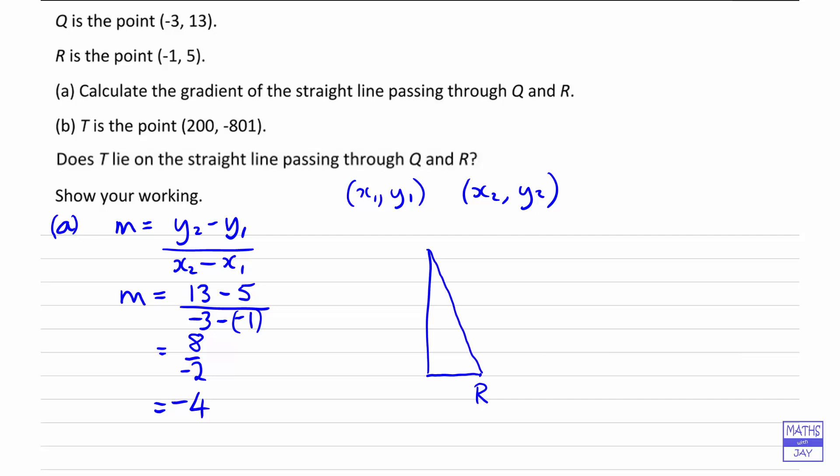So this is just a sketch to kind of think about where one point is in relation to the other. So we've got a right angle triangle where this side is 2 and this side is 8. And we can see the gradient is negative, so the gradient is going to be the difference in y divided by the difference in x - so that's 8 divided by 2 - and negative gradient, so negative 4.